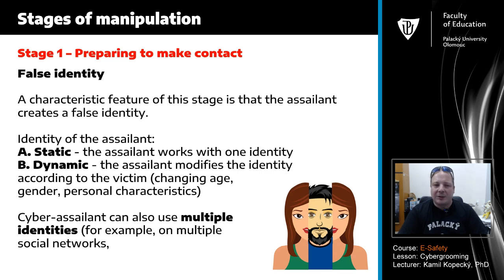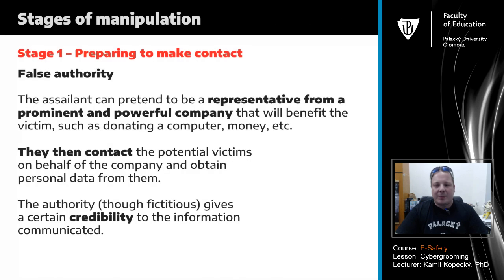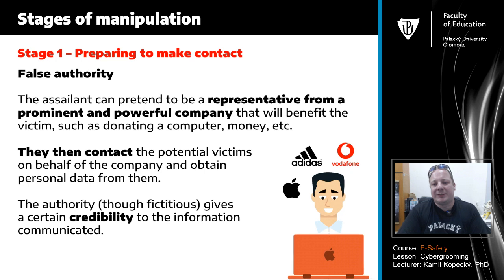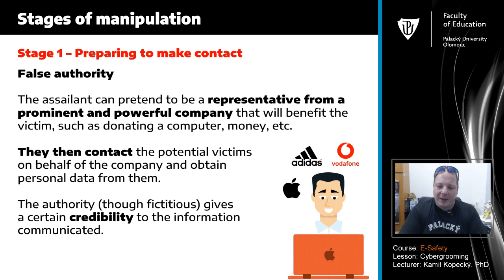A cyber assailant can also use multiple identities across multiple social networks. Another problem connected with stage one is false authority — the assailant can pretend to be a representative from a prominent and powerful company, for example Vodafone, Adidas, Apple, Google, or Microsoft, that will benefit the victim such as donating a computer, money, or a mobile phone. They contact potential victims on behalf of the company and obtain personal data from them. The fictitious authority gives a certain credibility to the information communicated.